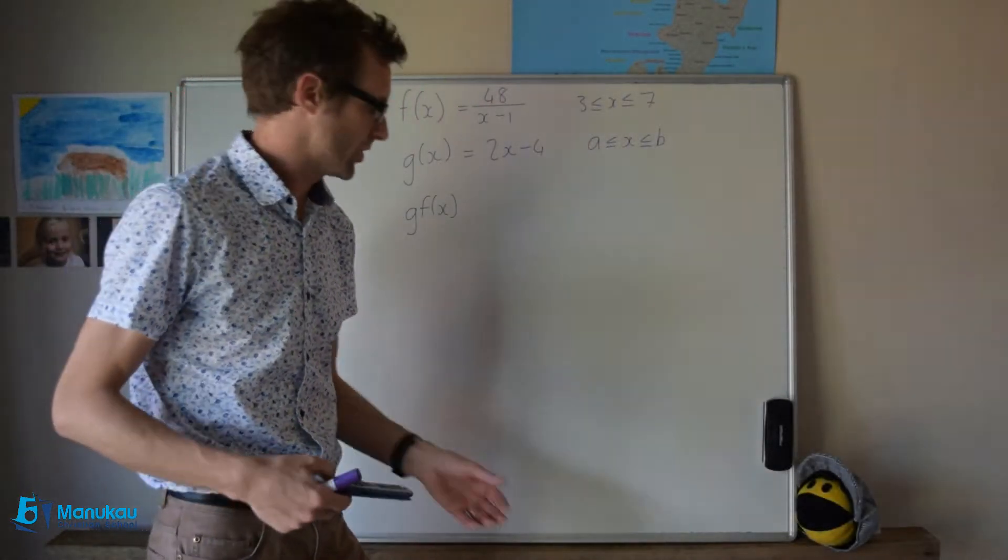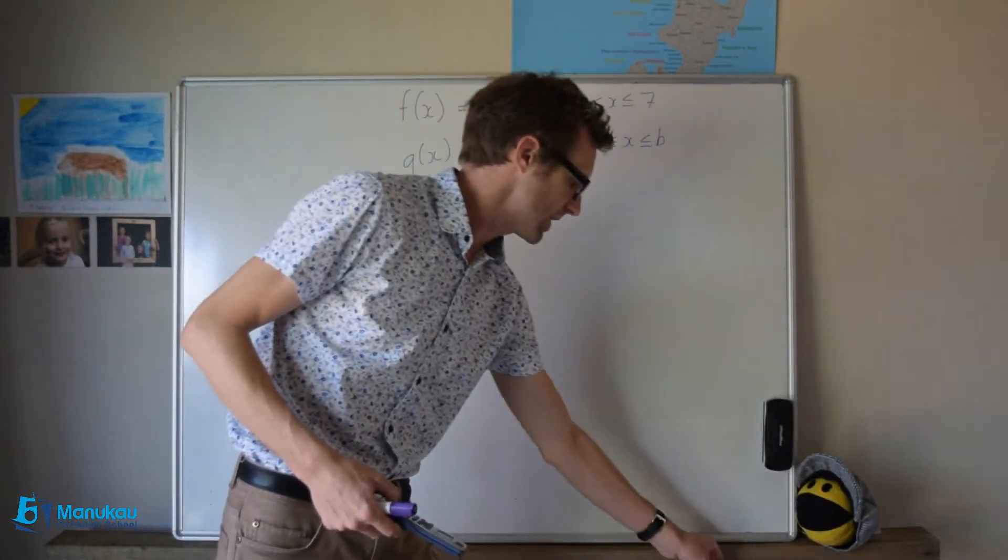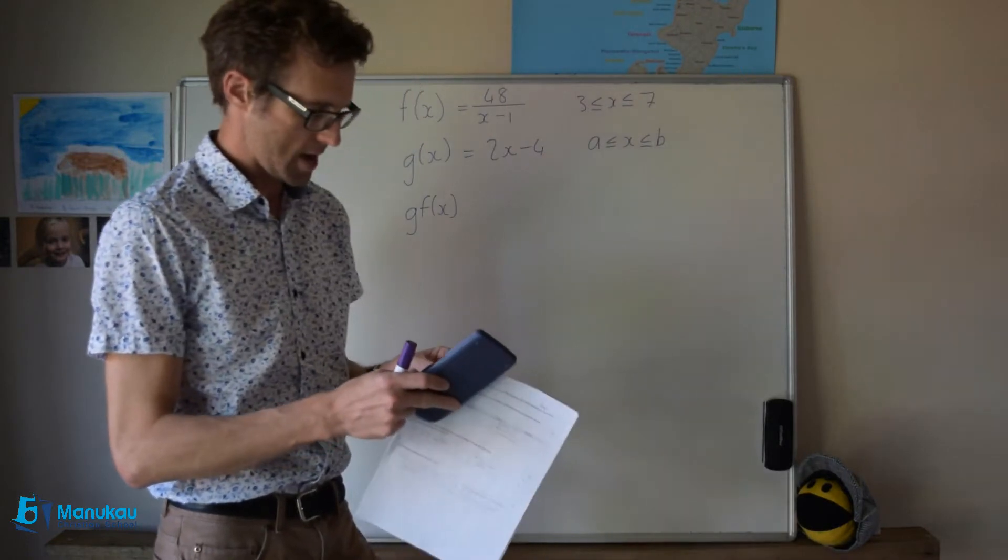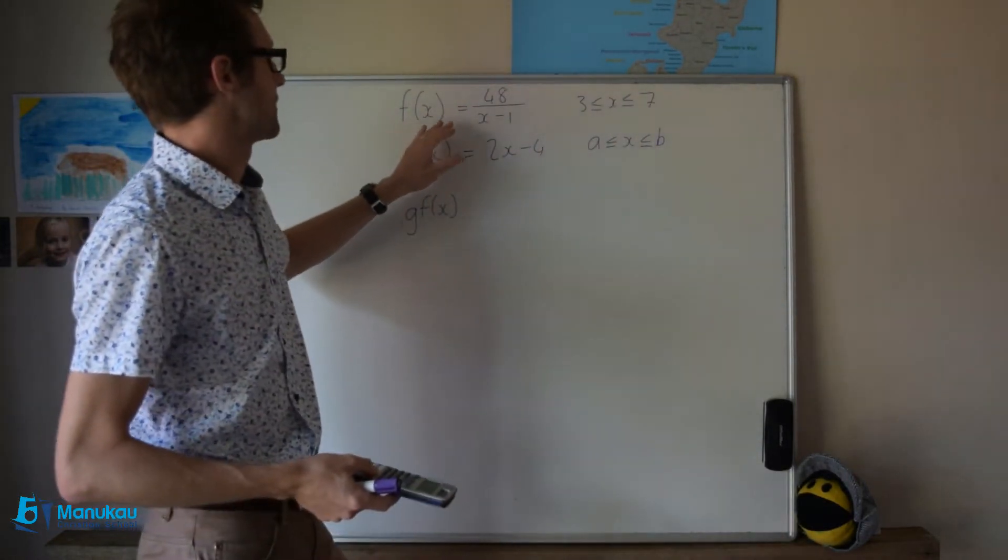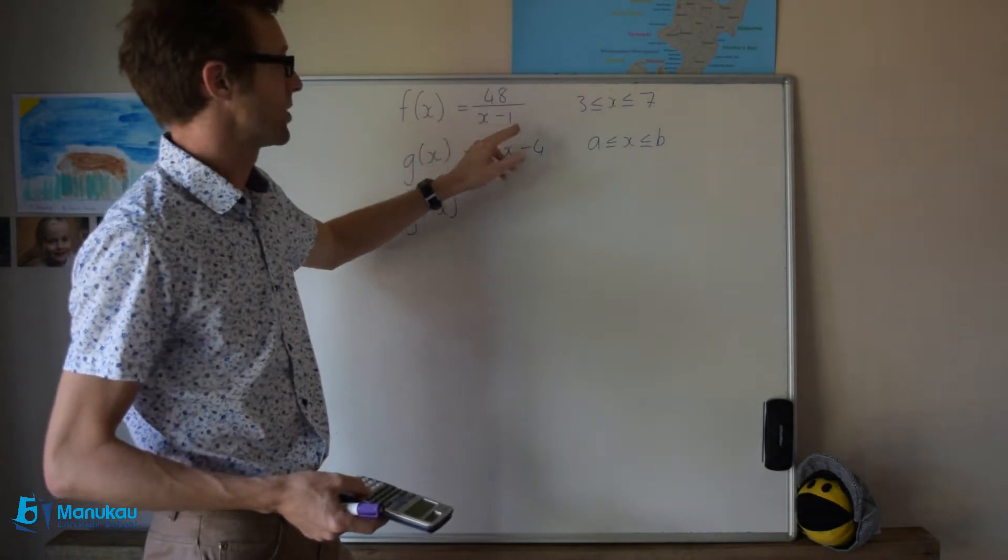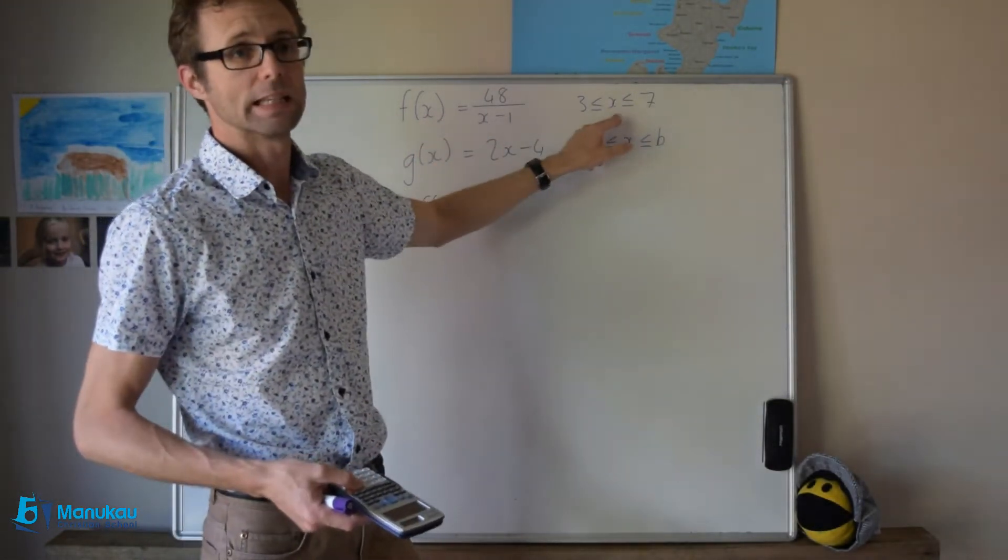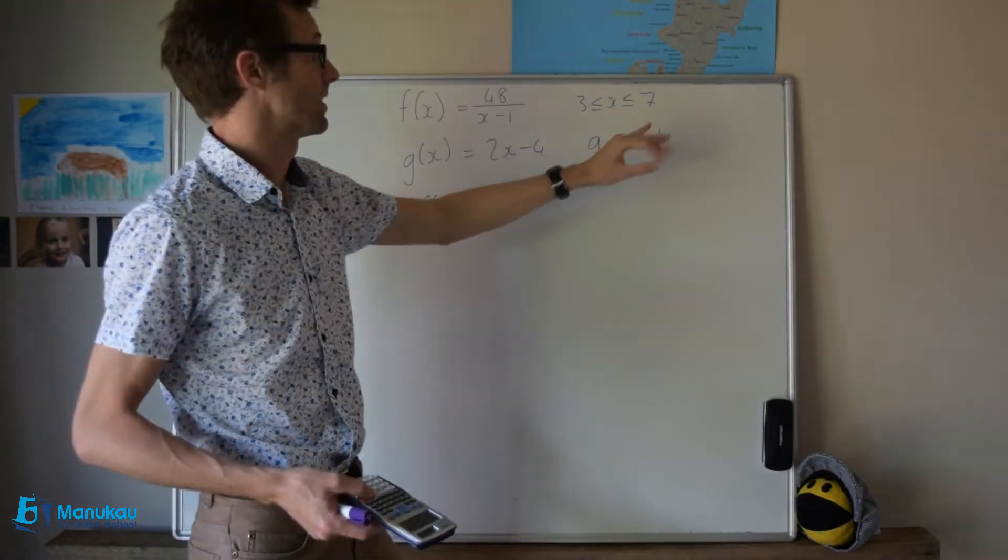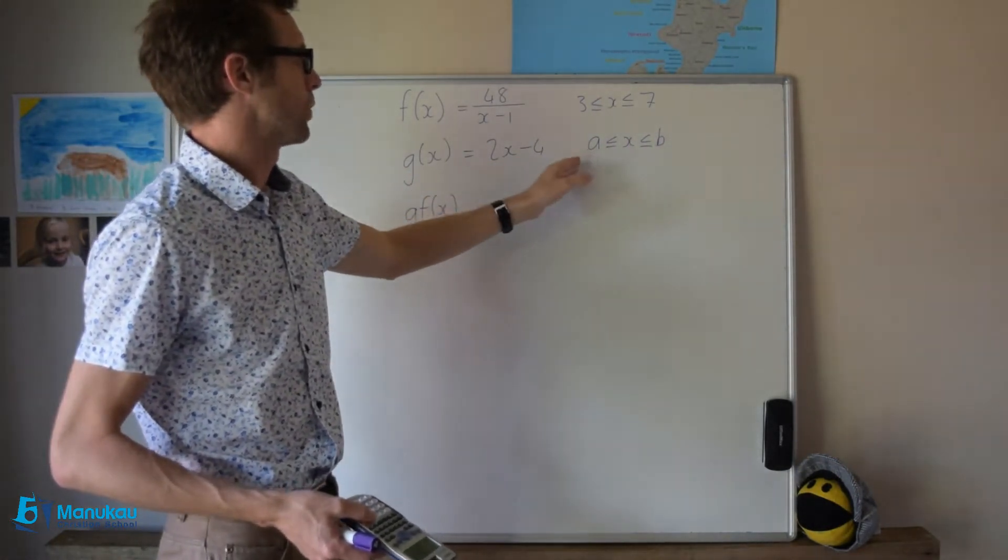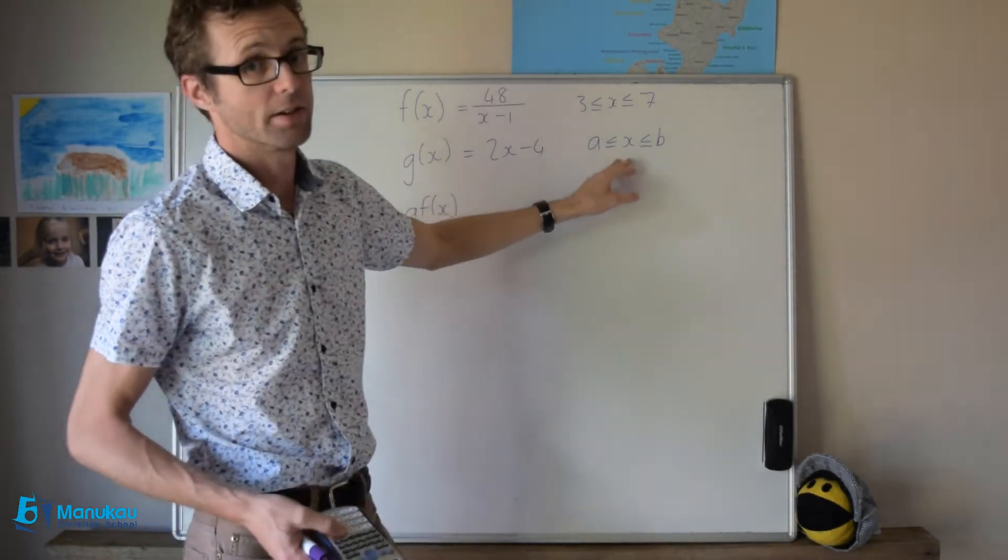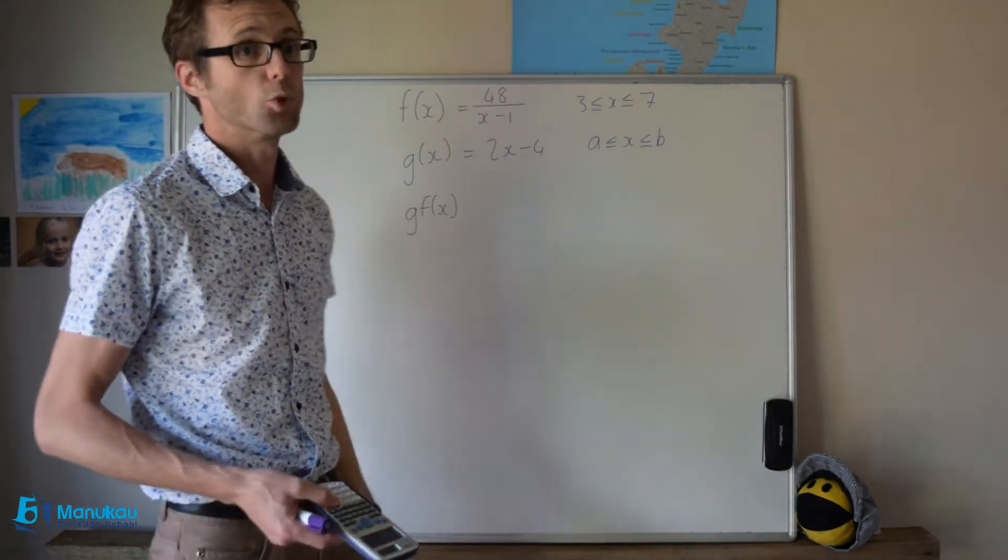I'm going to work through question 3 in your pure maths test for you now. We've got the function f of x defined as 48 divided by x minus 1, and the domain is 3 is less than x, less than or equal to 7. We have a function g(x) which is 2x minus 4, and it is for a domain of a is less than or equal to x is less than or equal to b.